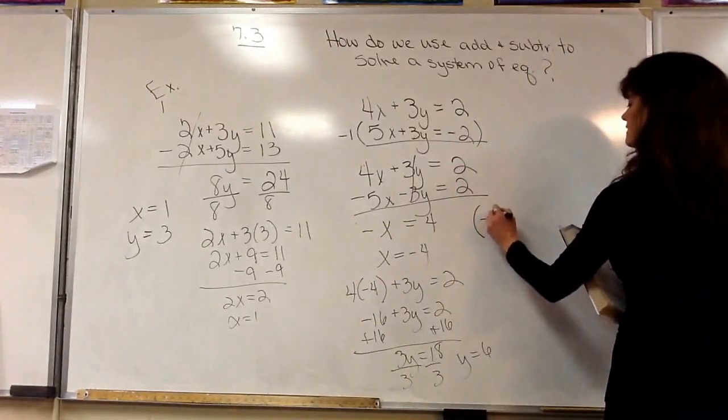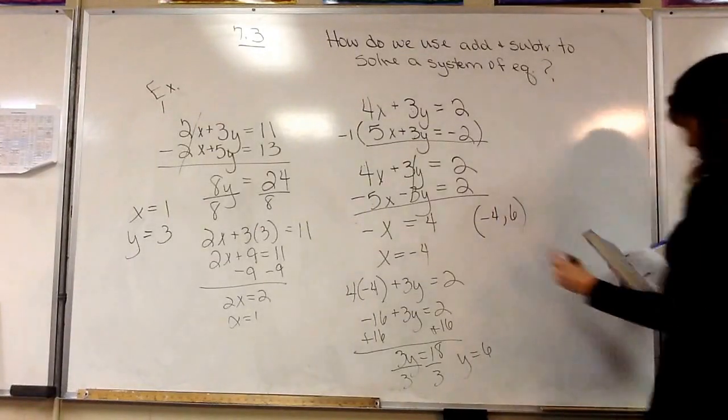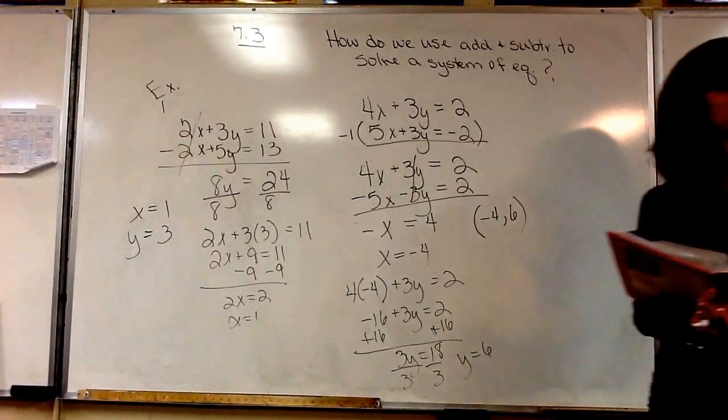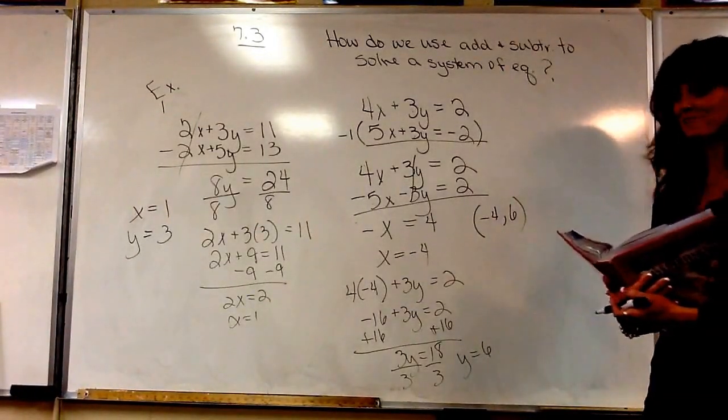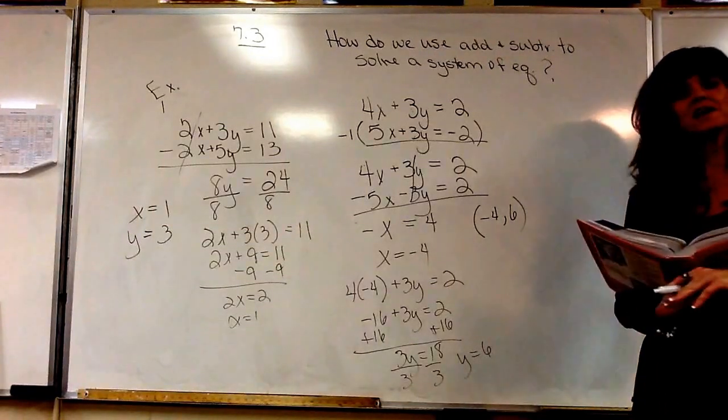So x is negative 4, y is 6. And it's just that simple. Okay, so take a moment and look at that.